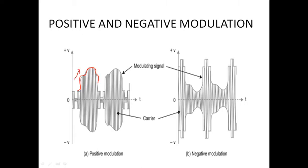In the opposite case, when the polarity of the modulating video signal is chosen such that the sync tip lies at 100% level of the carrier amplitude and increasing brightness produces a decrease in the modulation envelope, it is called negative modulation. From the figure, the maximum is the sync tip. Whenever there is an increase in brightness, the amplitude of the carrier decreases.